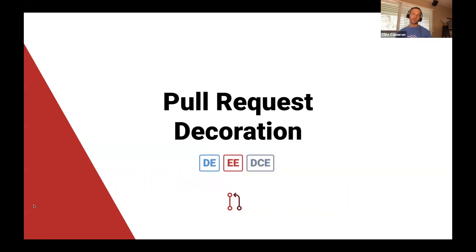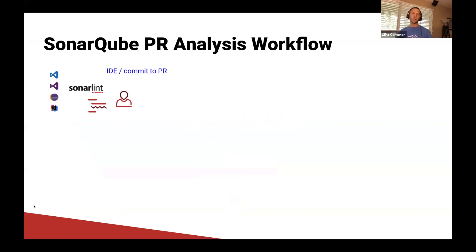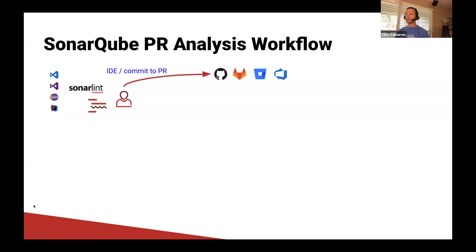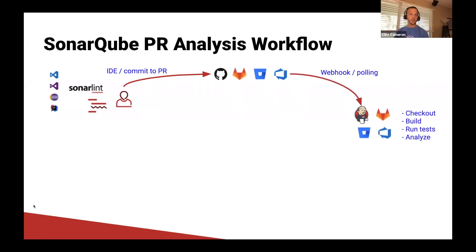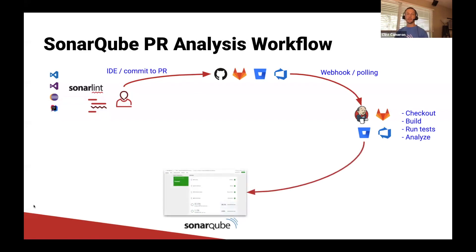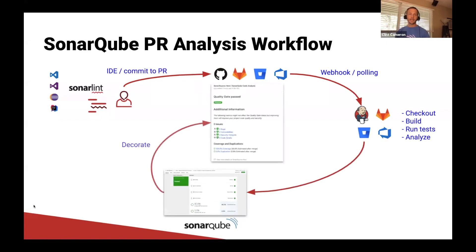Let's see firsthand how SonarCube integrates with ALMs and what it can do for your PRs. This feature is available starting with Developer Edition, and it's easy to request a free trial online at sonarcube.org. Before the live demo, let's look at a typical workflow. SonarLint is a free and open source IDE extension that finds issues on the fly while you're coding. Once we're done writing code and open a PR, that kicks off our CI systems to check out and build the code, which in turn kicks off an automatic SonarCube analysis.